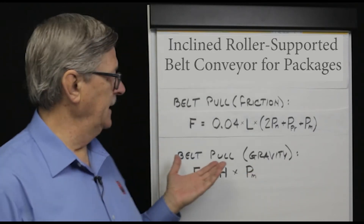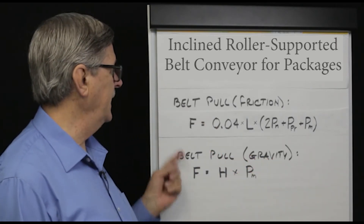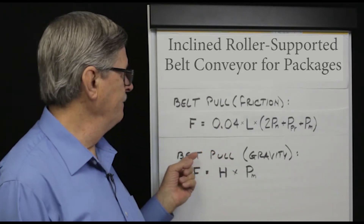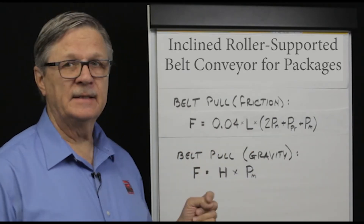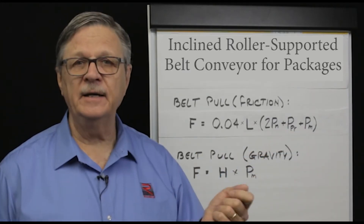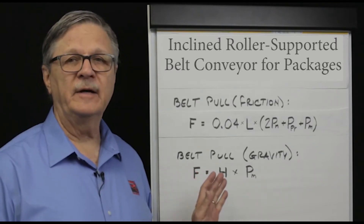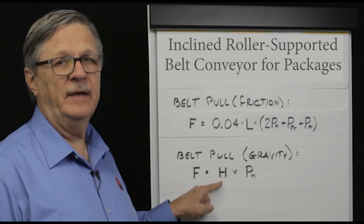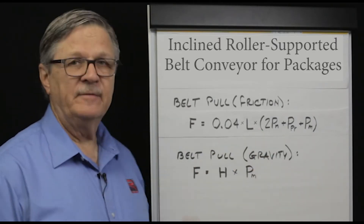Let me explain what the two equations mean. The first one shows how to calculate the required belt pull to overcome friction in the roller bearings. L represents the length of the conveyor. PN, PPR, and PM I'll define in just a minute. The equation required to figure out belt pull to overcome gravity is here, where H refers to the change in elevation from the tail pulley to the head pulley.